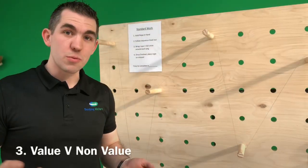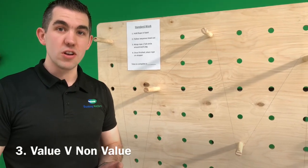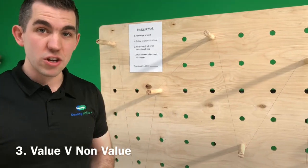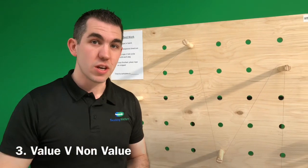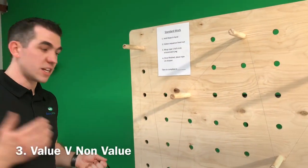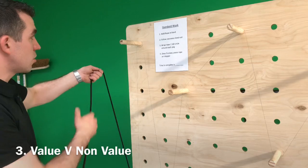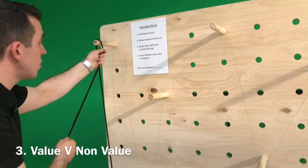So the next key learning that we use the flow board for is value versus non-value. And this is a massive takeaway if you can internalize what I'm just about to show you. So value is only created when a product is changing. So an actual rope, we're going to call it value when the rope wraps around the peg.